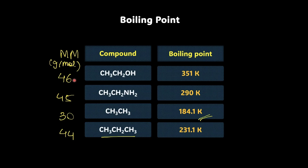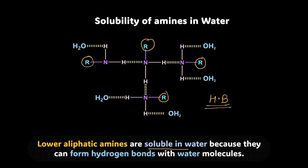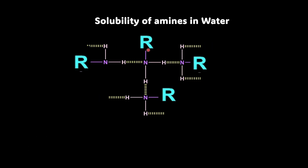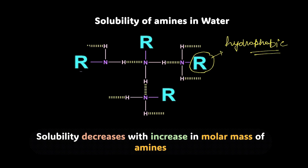Now let's talk about the solubility of amines in water. Lower aliphatic amines are soluble in water because they can form hydrogen bonds with water molecules, since the R group is very small — maybe a methyl or an ethyl. But as the alkyl group becomes bulkier, solubility decreases with the increase in molar mass of the amine, because these larger alkyl chains are hydrophobic and repel water molecules, making hydrogen bonding with water very difficult.